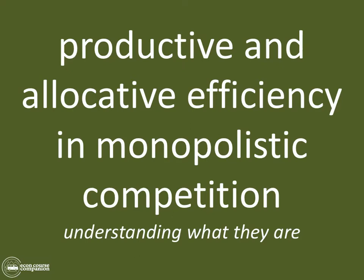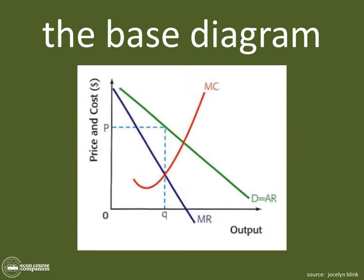Hey everybody, hope you're doing well. This is Brad Cartwright with Econ Course Companion. Today we're going to take a look at productive and allocative efficiency in the market structure of monopolistic competition. The key point is you need to understand how to show them based on whatever profit level these firms might be operating in — whether that be abnormal profit, losses, or normal profit.